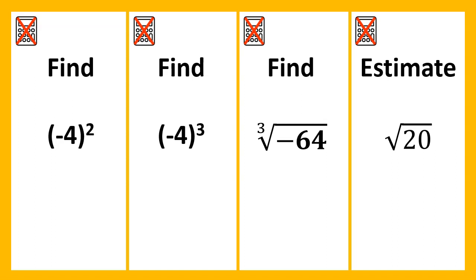The first question, we have negative 4 squared. Notice how negative 4 is inside the bracket. So that means everything inside the bracket is being multiplied by itself which would be negative 4 multiplied by negative 4. When you multiply a negative by a negative, we end up with a positive. So 16.